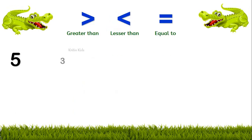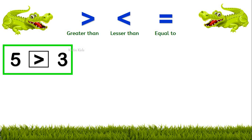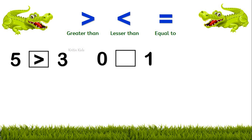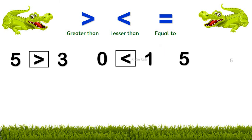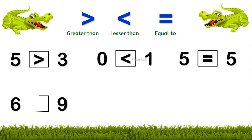Now let's go through some examples. 5 and 3 — which sign will we put here? We will put the greater than sign, and it is read as '5 is greater than 3.' Next, 0 and 1. And then 5 is equal to 5. Our next example is 6 and 9 — which sign will we use here? We will use the less than sign. Correct — 6 is less than 9.